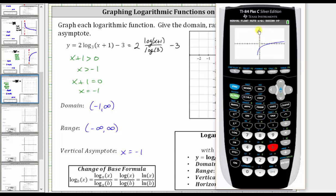Notice how this does verify x equals negative one is a vertical asymptote. The domain is the open interval from negative one to infinity, and because the graph goes down and up without any holes or breaks, the range is the open interval from negative infinity to positive infinity.